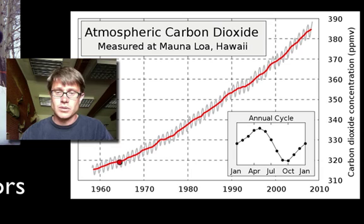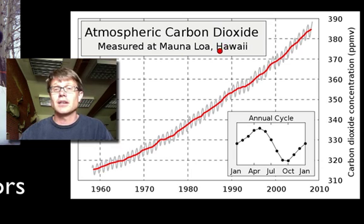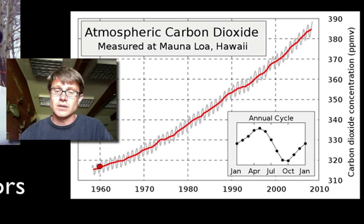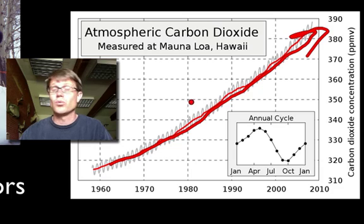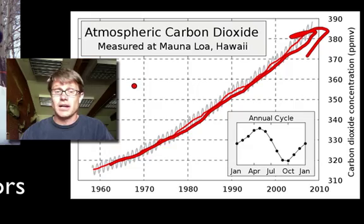An abiotic factor: this would be a graph of atmospheric carbon dioxide. They've been studying the amount of carbon dioxide in the atmosphere over the last 50 years. We've seen an increase in the amount of carbon dioxide, and that's causing global warming, so the temperature is getting warmer and warmer. Now temperature is not alive, and so we call that an abiotic factor.